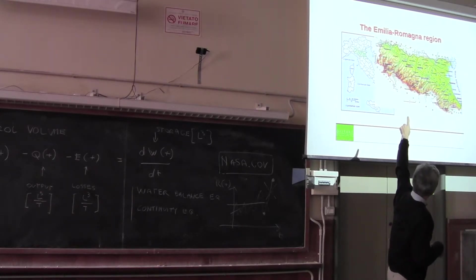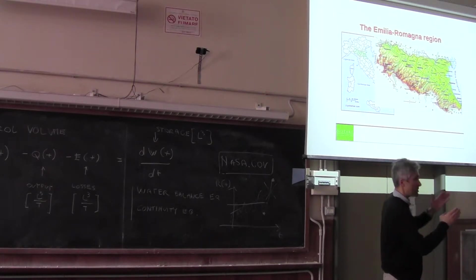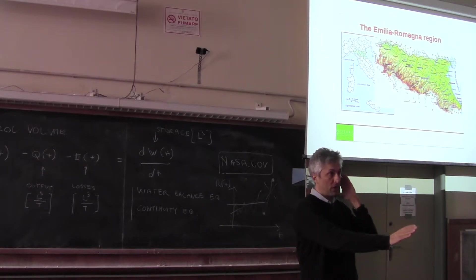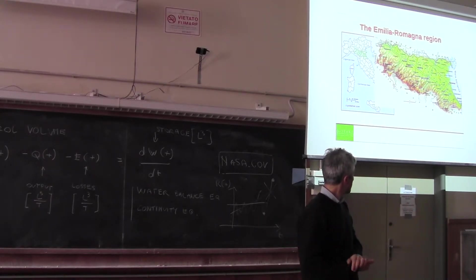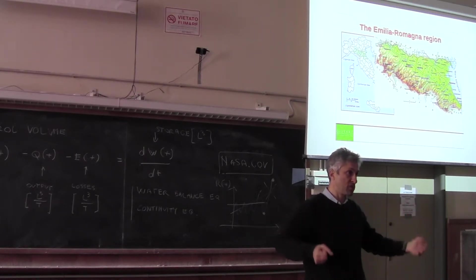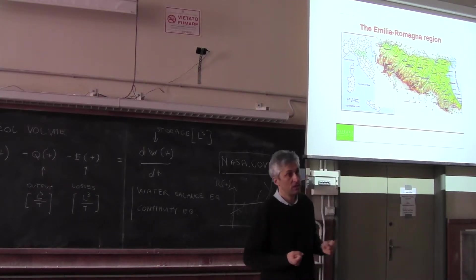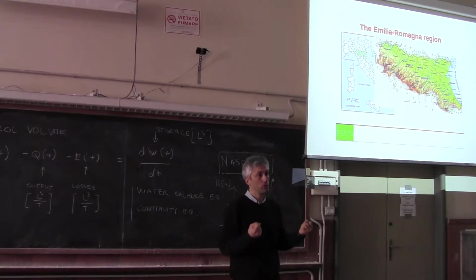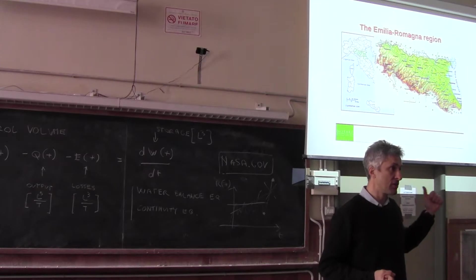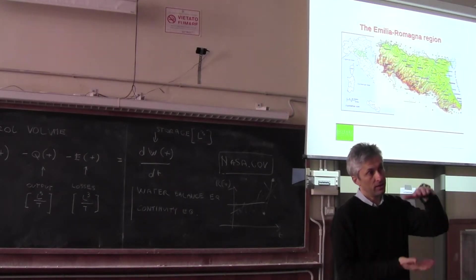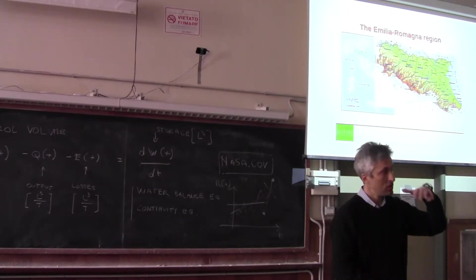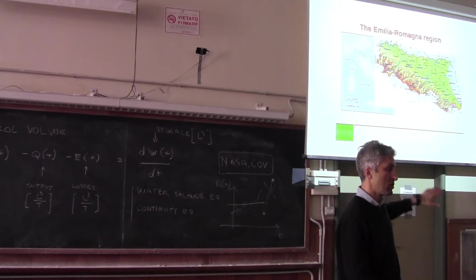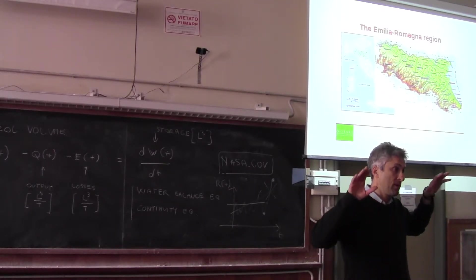Besides groundwater, we have rivers from which we can take water. Rivers are the preferential water source — ready-to-use water. The rivers flowing from the Apennines are especially interesting because they are located at higher altitude, so this water can flow spontaneously to the flat area where irrigation takes place — it can be used for irrigation without any energy expense, as it uses its potential energy to reach the field.